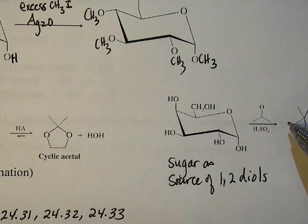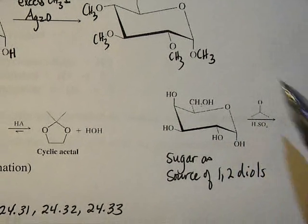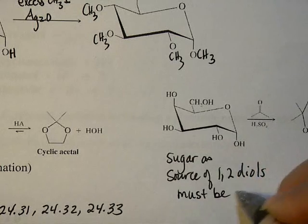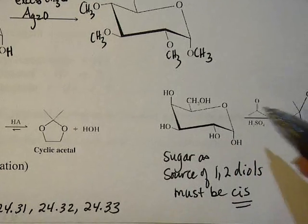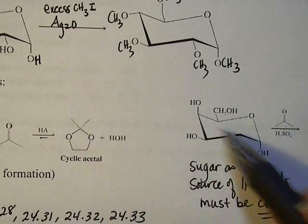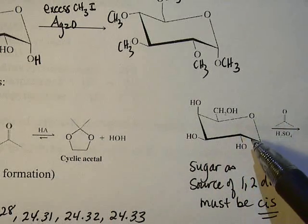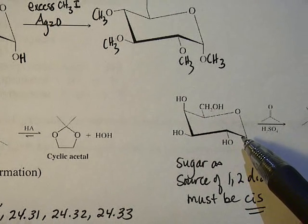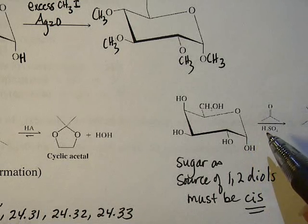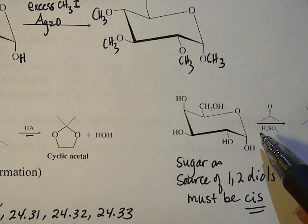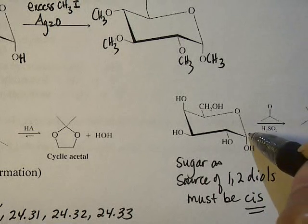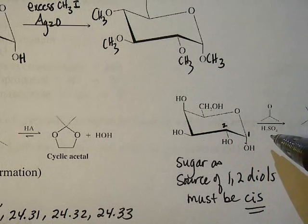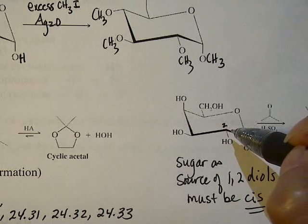There is a restriction for this to work with sugars. Using acetone as our source of carbonyl, the 1,2-diol has to be cis in order for the reaction to work. To form this ring on top of the ring that's already there, it's constrained — if the OHs are trans to each other, it's not going to work. Remember, cis and trans here has nothing to do with axial or equatorial positions, but whether they are on the same side or opposite sides of the plane.